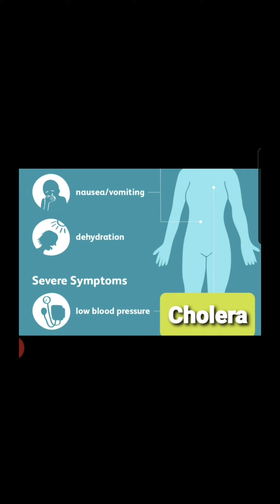When a person eats contaminated food or drinks polluted water, they can suffer from cholera or typhoid. The symptoms of cholera include nausea or feeling like vomiting, dehydration — a loss of water from the body causing constant thirst — and low blood pressure.